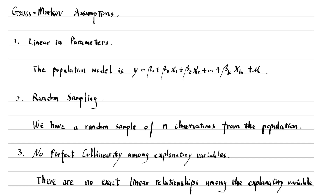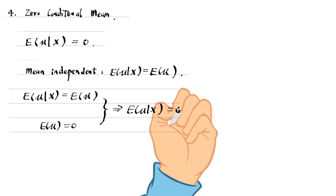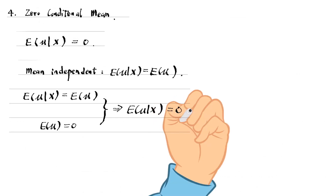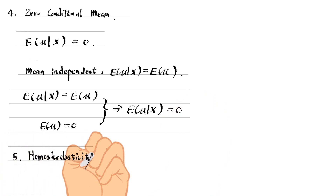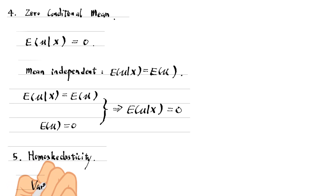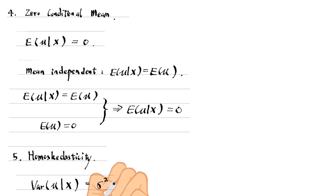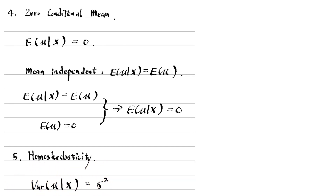The first four assumptions are: linear in parameters, random sampling, no perfect collinearity, and zero conditional mean. The fifth Gauss-Markov assumption is the homoscedasticity assumption: the error term mu has the same variance given any value of the explanatory variables. The variance of mu conditional on X equals sigma squared, where sigma squared is a constant.